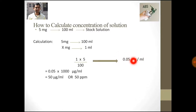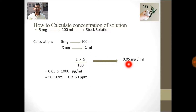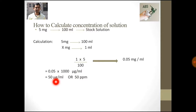Now we need to convert this mg per ml into microgram per ml. Since 1 mg equals 1000 micrograms, we multiply 0.05 by 1000, which gives 50 micrograms per ml, or a 50 ppm solution.